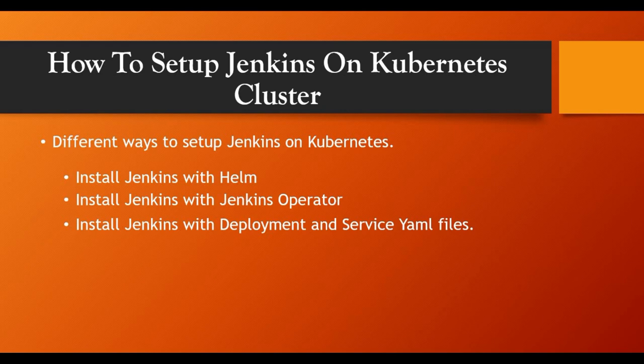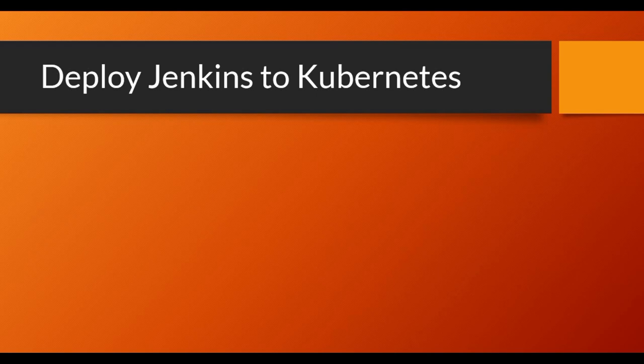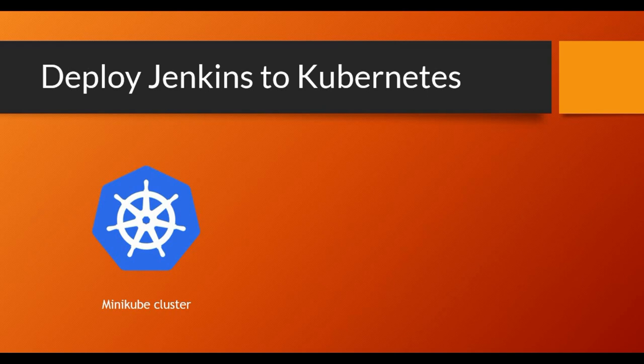If you have seen my tutorial on Kubernetes, we have spoken about how to write deployment manifest files and service manifest files. We have not gone into Helm and other topics, so in this video what we will be doing is setting up Jenkins on Kubernetes using the basic YAML files.